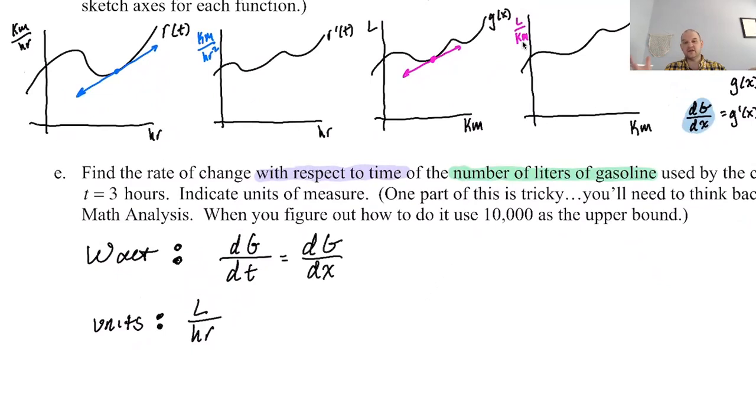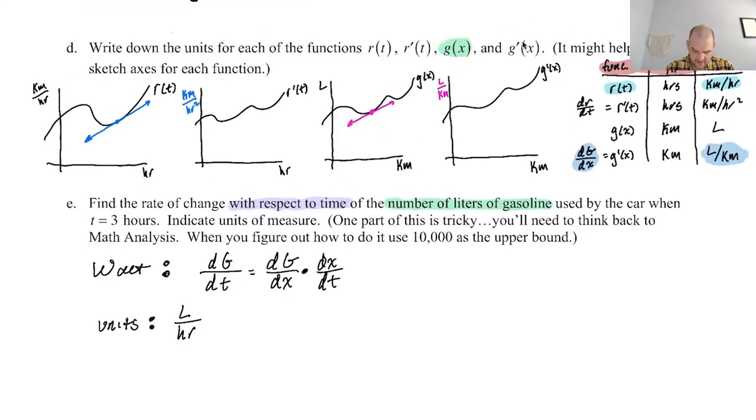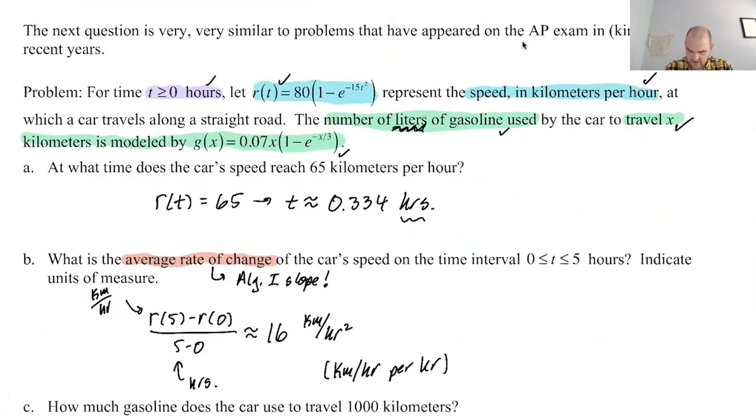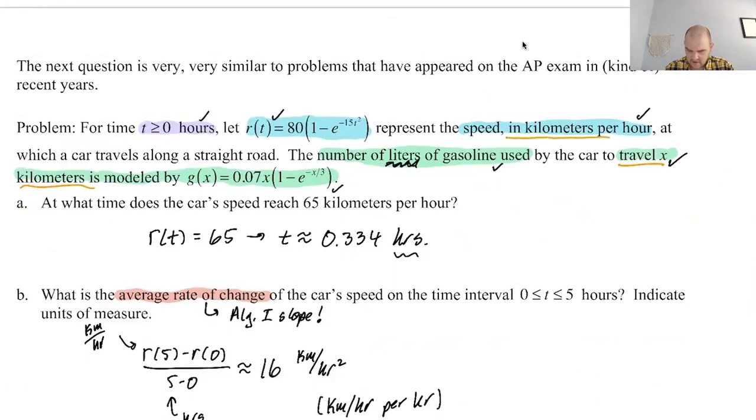So let me see if this makes sense to me. So dg dt, from a chain rule standpoint, g is a function of x. So it could be dg dx. Now, what would I need to multiply that by to end up with dg dt? It would have to be, so if you think of it as the dx is canceling, it would have to be dx dt. If we do this, we'll end up with dg dt. This is a chain rule problem. Now, what is dx dt? Well, that's a different question. So x, if we go back to the definition of a function, x is the number of kilometers traveled. So travel x kilometers. So dx dt is the rate of change of kilometers per hour. It's kilometers per hour. What gives us kilometers per hour? Well, look at this function. kilometers per hour. So it's actually r of t is dx dt.